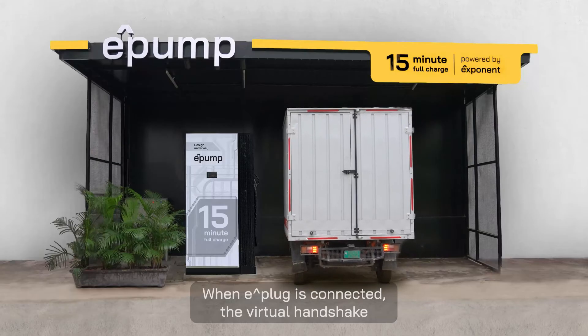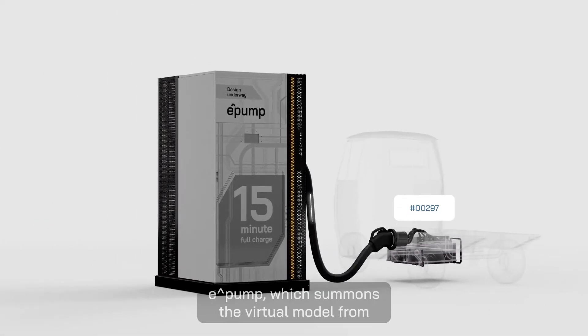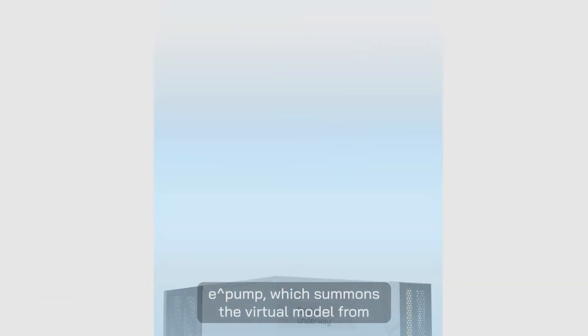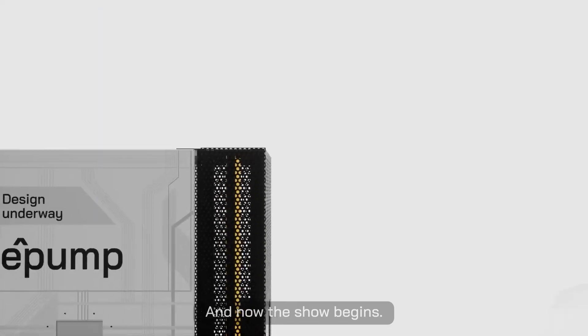When E-Plug is connected, the virtual handshake sets the ball rolling. The BMS relays the E-Pack ID to the E-Pump which summons the virtual model from the cloud to generate a custom charging profile. And now the show begins.